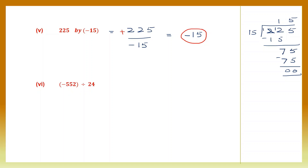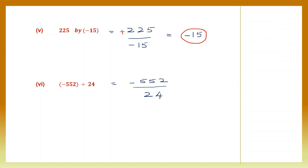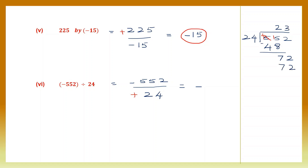Question 6: minus 552 divided by 24. 552 has a minus sign; 24 doesn't, so it's understood as plus. Signs are different, so our final answer will be negative. Dividing 552 by 24: 24 ones are 24, 24 twos are 48, subtract and borrow — 15 minus 8 is 7, bring down 2 to get 72. 24 threes are 72, so quotient is 23. Final answer with the sign is minus 23.